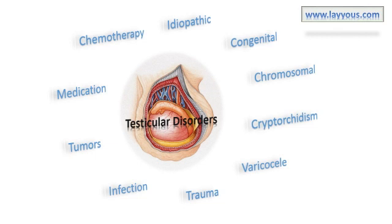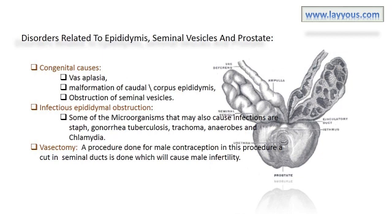Disorders related to epididymis, seminal vesicles, and prostate — congenital causes include vasoplasia and malformation of the corpus epididymis, congenital obstruction of seminal vesicles, and congenital obstruction associated with bronchial dilatation of the lungs. Severe infections may cause epididymal obstruction; microorganisms that may cause infections include staph, gonorrhea, tuberculosis, trachoma, anaerobes, and chlamydia. Vasectomy — a procedure done for male contraception in which a cut in the seminal ducts causes male infertility.